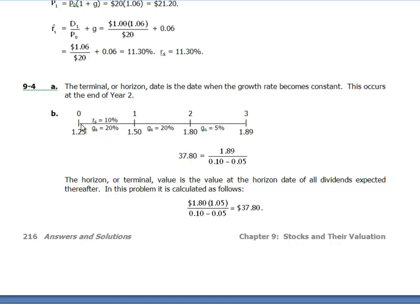D0 = $1.25. With 20% growth, D1 = $1.50, D2 = $1.80. Then at 5% growth, D3 = $1.89.